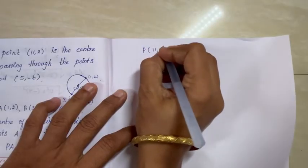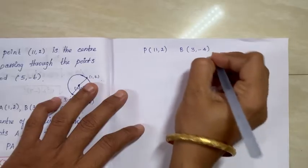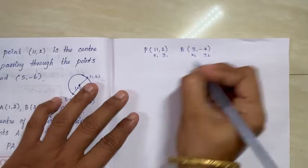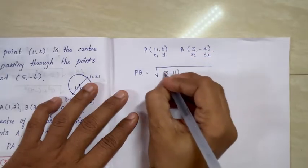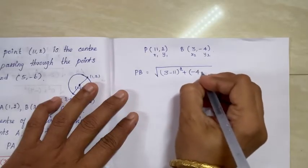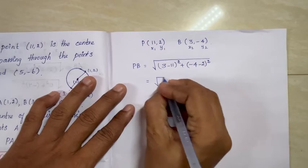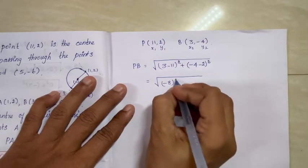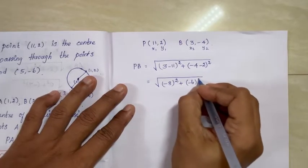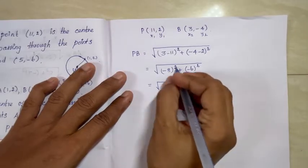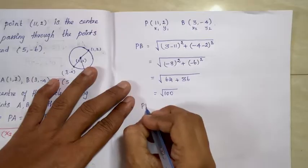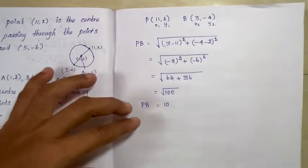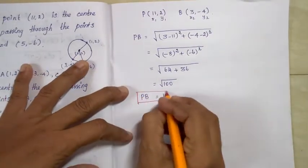Now find PB: P is (11,2) and B is (3,−4). PB = √[(3−11)² + (−4−2)²] = √[(−8)² + (−6)²] = √[64 + 36] = √100. Therefore PB = 10 units.